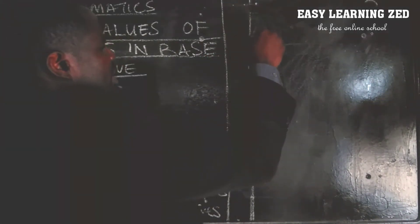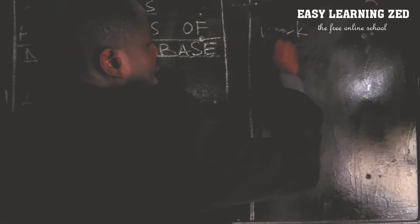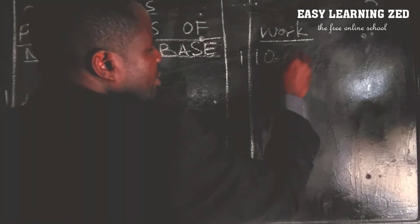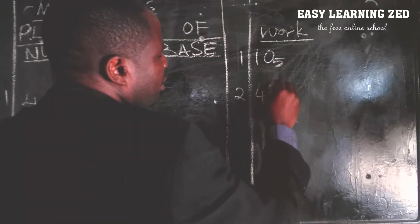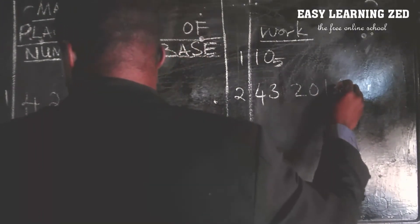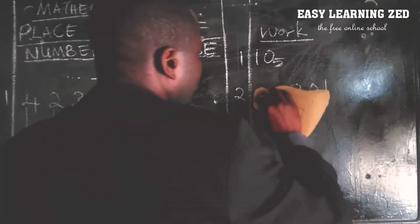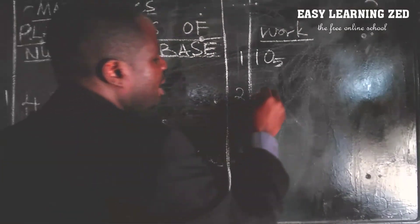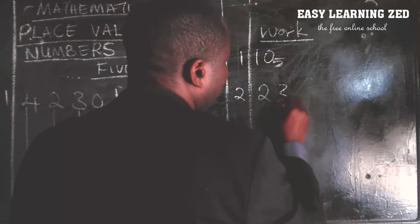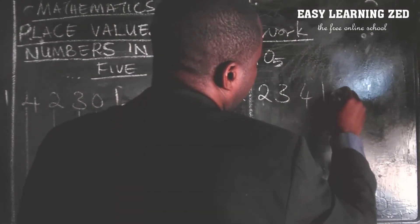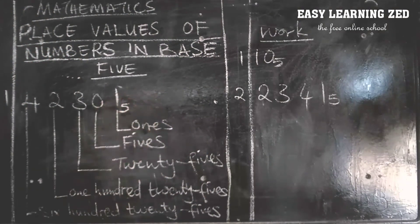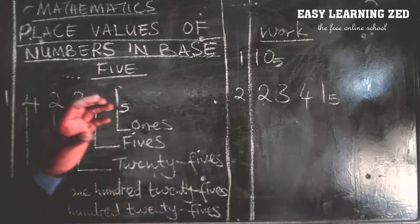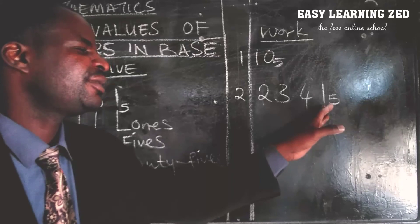I'll give you two numbers for practice. Number one: write the place value of one and zero in the number ten in base five. Number two: we have the number two three four one — write the place value of each digit. This number is also in base five, so write the place value of one, four, three, and two.